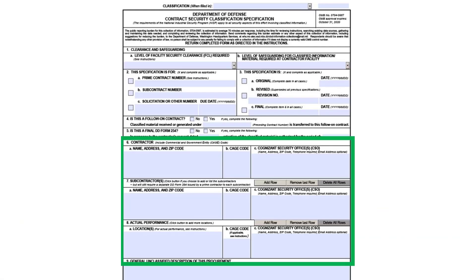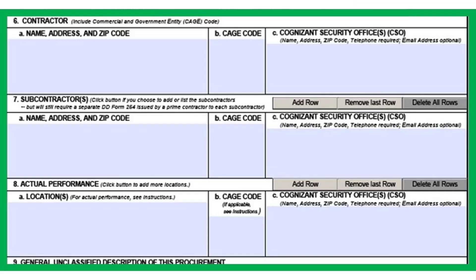The second focus area is highlighted here in green. For solicitation DD Forms 254, company names may not appear. Most of the time, but not all, you will see TBD or 'to be determined' in these areas as there may be multiple proposals. This section is completed on the award of the DD Forms 254.